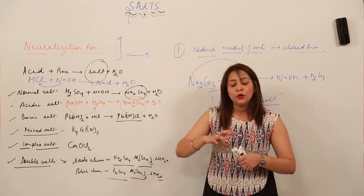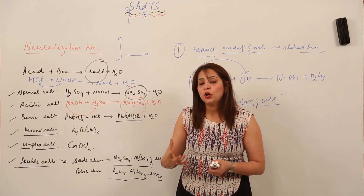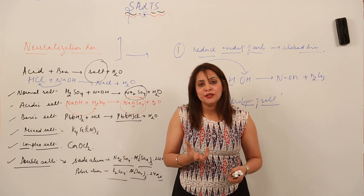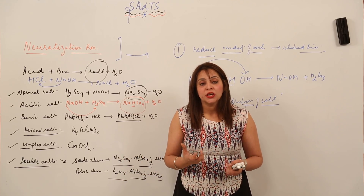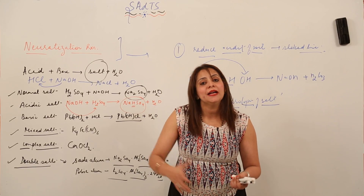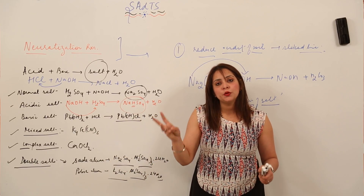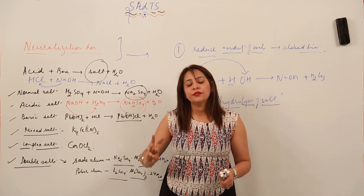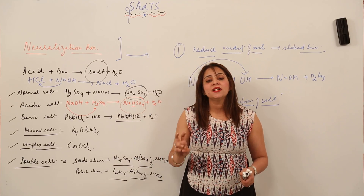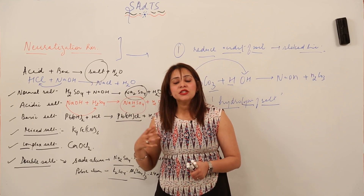When electric current is passed through most salts, they get ionized, producing their respective ions. For example, copper sulfate (CuSO4) dissociates into copper ions and sulfate ions. So the third property is that aqueous solutions of most salts are good conductors of electricity — they get ionized when electric current is passed through them.